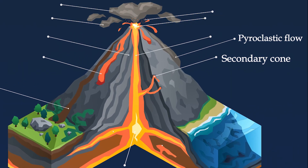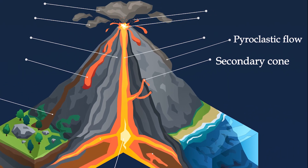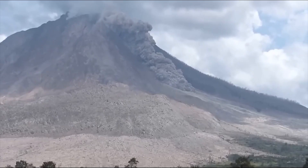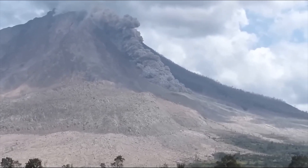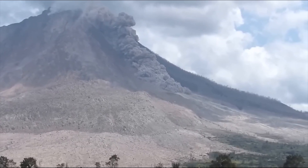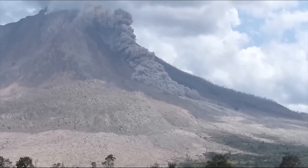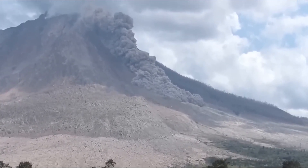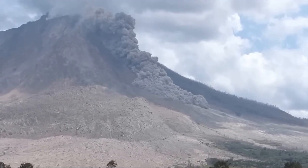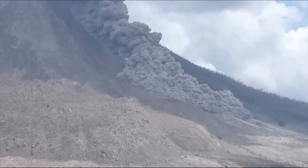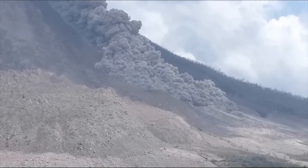Pyroclastic flows are avalanches containing hot volcanic gases, ash, and rock. They are the most deadly event to happen at a volcano. Pyroclastic flows have killed over 90,000 people since 1600 AD. 30,000 people were killed by a pyroclastic flow from Mount Pelée in 1902.